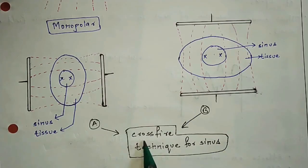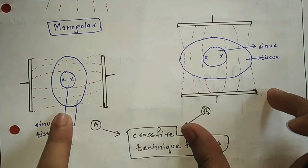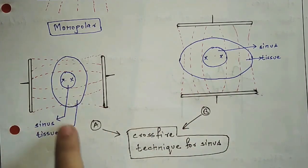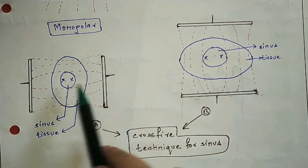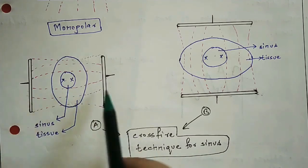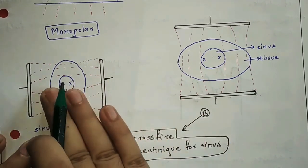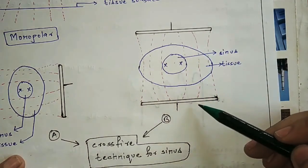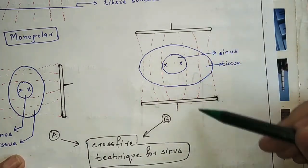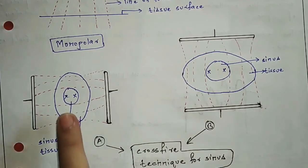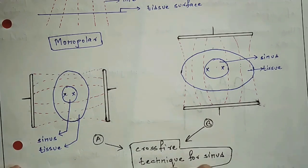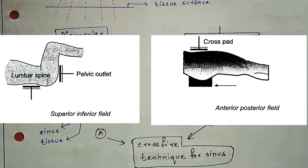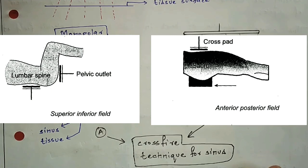Finally, there is the cross-fire technique. In this method, treatment is done in two halves. In the first half, the electrode is placed in one direction — for example, in the medial or lateral aspect. In the second half, the placement of the electrode is changed to the anterior and posterior aspect. So the first session is done one way, and the second session the other way.